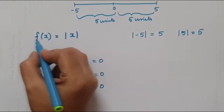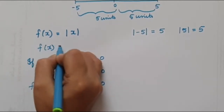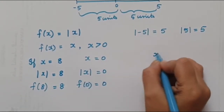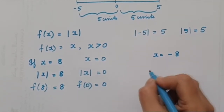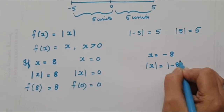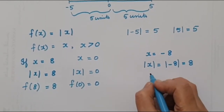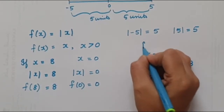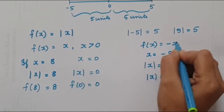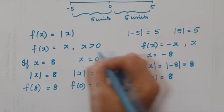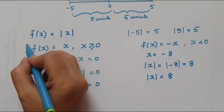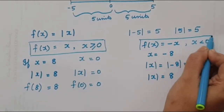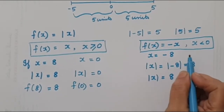So we know that f(x) = x when x is greater than or equal to 0. Now let us take a negative number: x = -8. Then |x| = |-8| = 8, so |x| = 8. From this we get the piecewise definition: f(x) = x if x ≥ 0, and f(x) = -x if x < 0.